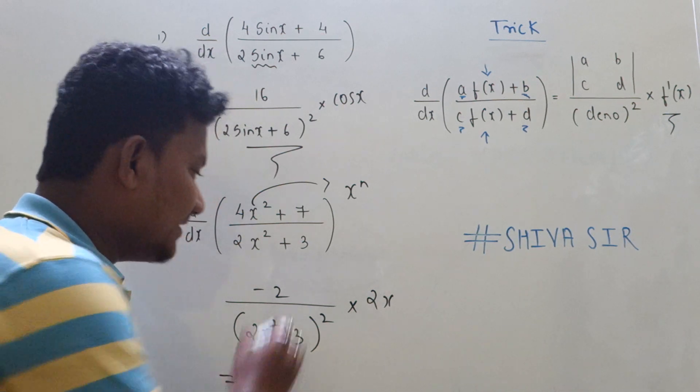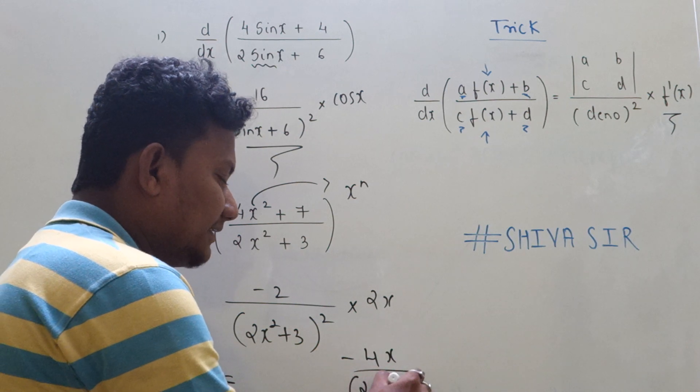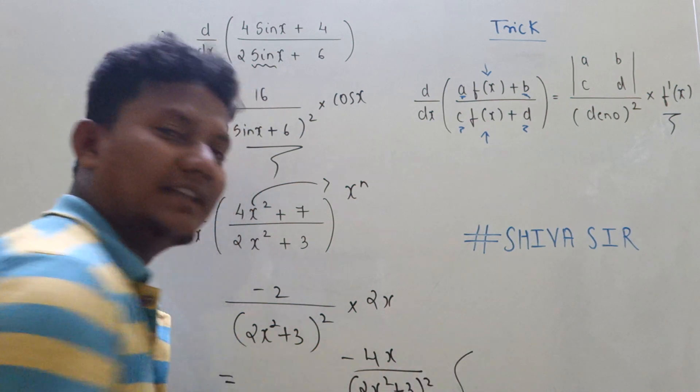And the final answer we can write as -4x / (2x² + 3)². That's it.